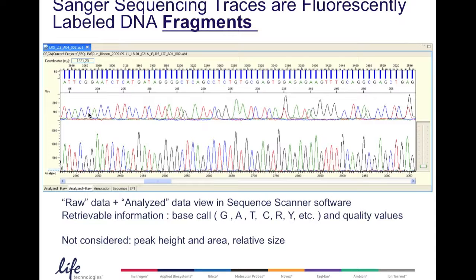What you see here is a typical example in Sequence Scanner software. You see the raw data files and then the analyzed data view. The information that you get from the sequence analysis software is the base call. So you get an assignment of the nucleotide to its identity: G, A, T, C, or in case you have mixed bases, R or Y. You get quality values, shown here as the blue bars. But what you will not get with sequence analysis software is any information on peak height and area and relative size.